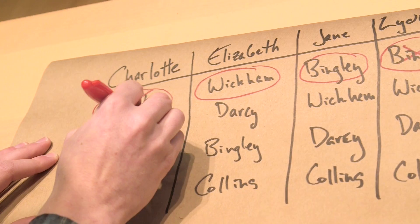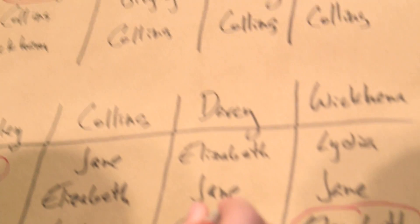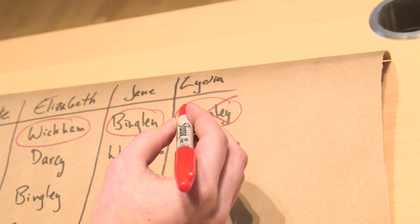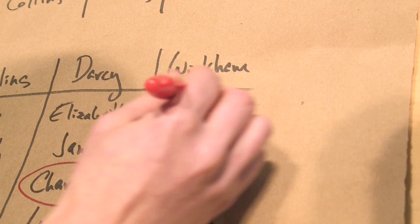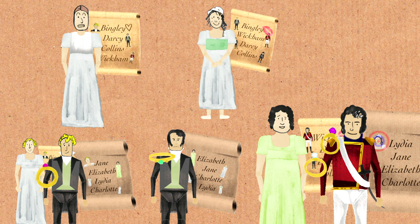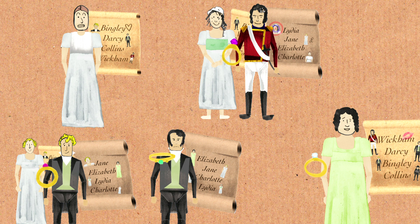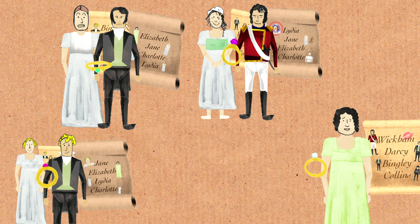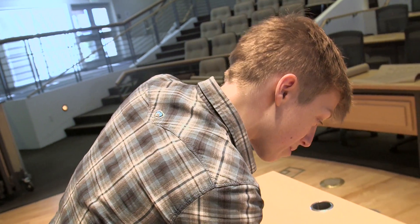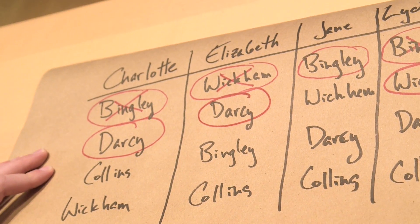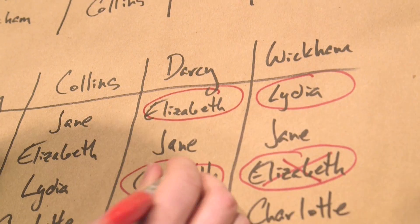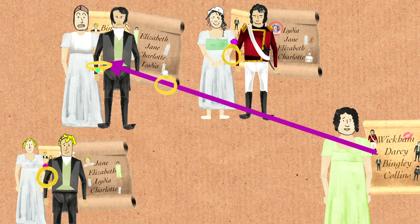Bingley prefers Jane to Lydia and Charlotte, so he rejects Lydia and Charlotte. At the end of day one we have two tentative engagements: Elizabeth to Wickham and Jane to Bingley. On day two, Charlotte and Lydia — both rejected — make new proposals. Charlotte proposes to Darcy, and Lydia proposes to Wickham. Wickham was tentatively engaged to Elizabeth, but he likes Lydia better, so he rejects Elizabeth. At the end of day two we have three tentative engagements: Charlotte to Darcy, Jane to Bingley, and Lydia to Wickham — with Elizabeth unengaged.